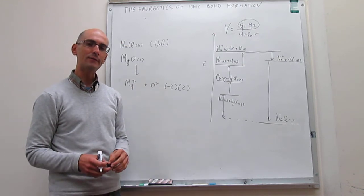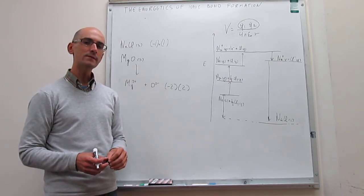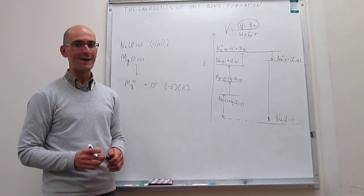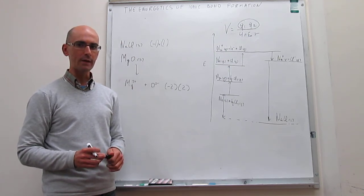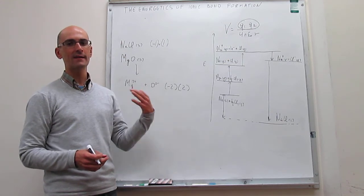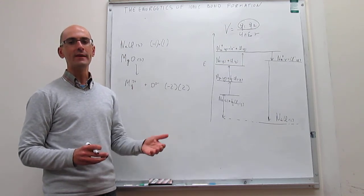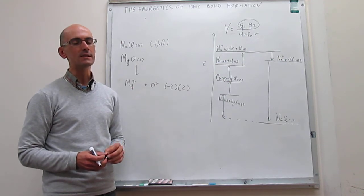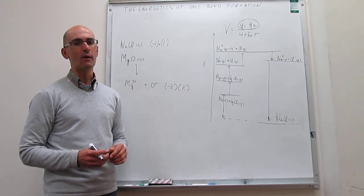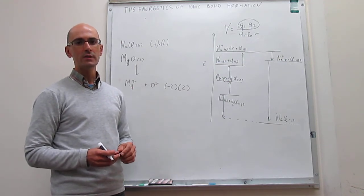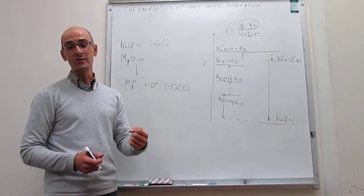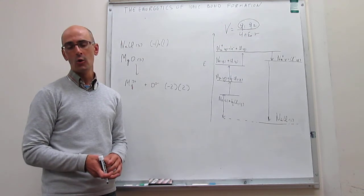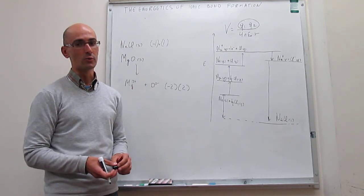In this video, we have described how to think about the formation of ionic bonds from an energetic perspective. We have seen that in the idealized formation process, there are many steps that require energy, but all those tend to be compensated by the lattice energy — the electrostatic interaction between ions in the ionic solid — which can be well captured by Coulomb's law.